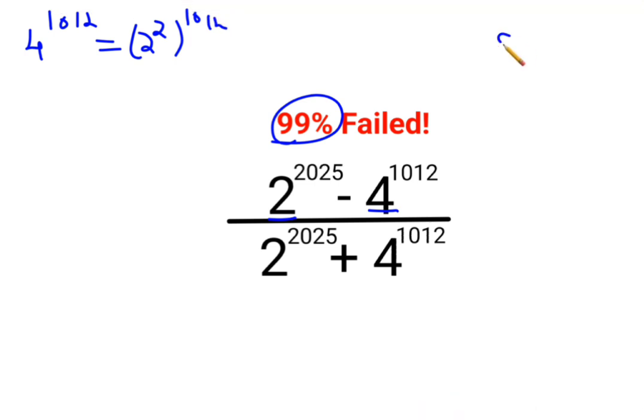And in indices we know A raised to M, the whole raised to N, can be written as A raised to M into N. So this is nothing but 2 raised to 2024.